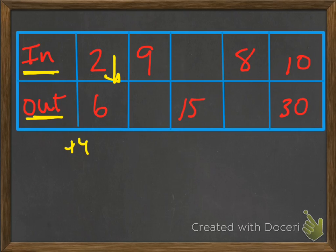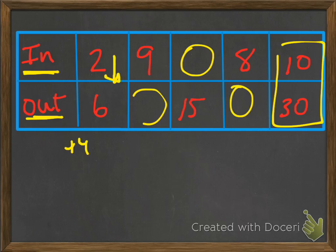It could be. We don't have the other numbers here, or here, or here, but we have one here. Now, if I go from 10 to 30, if I add 4, is that going to get me 30? No. So adding 4 is not the rule.